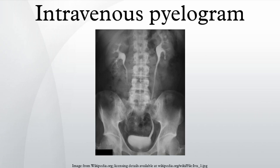At 9 to 13 minutes, the contrast begins to empty into the ureters and travel to the bladder, which has now begun to fill. To visualize the bladder correctly, a post-micturition X-ray is taken so that the bulk of the contrast is emptied. An IVP can be performed in either emergency or routine circumstances.